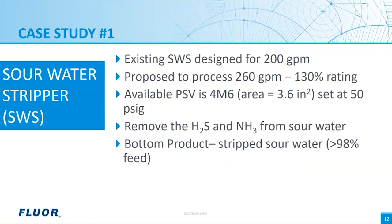Here is an example of dynamic simulation applications: relief analysis for a sour water stripper. This is a typical case for an existing column PSV re-rating with increased throughput. The column is designed to process 200 GPM sour water, now proposed to process 260 GPM, which is 130% of the original rating. An M-size PSV was installed with a set pressure of 50 psi. The column removes H2S and ammonia from sour water. The bottom product is the dominant part of the feed, taking above 98% of the feed, so the overhead is small — therefore the unbalanced heat method does not fit.